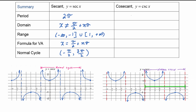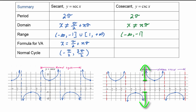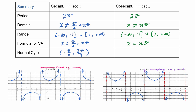For cosecant: the period is also two pi; the domain excludes x values that are multiples of pi, so x cannot equal n pi; the range is exactly the same as secant — negative infinity to negative one union one to positive infinity; the formula for vertical asymptotes is x equals n pi; and the normal cycle goes from zero to two pi. This is just a quick summary for your convenience of looking up attributes of these secant and cosecant graphs.